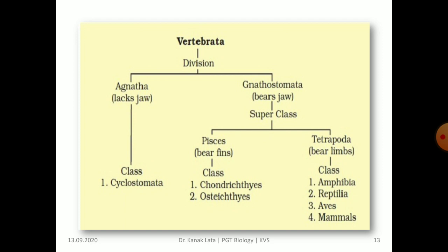This flowchart shows the classification of Vertebrata. It is broadly divided into two divisions — Agnatha and Gnathostomata. Agnatha lacks jaws, whereas Gnathostomata bears jaws. Agnatha is classified into one class, that is Cyclostomata. Gnathostomata is divided into two superclasses: Pisces and Tetrapoda. Pisces bear fins and Tetrapoda bear limbs. Pisces are classified into two classes — Chondrichthyes and Osteichthyes — whereas Tetrapoda is divided into four classes: Amphibia, Reptilia, Aves and Mammalia.